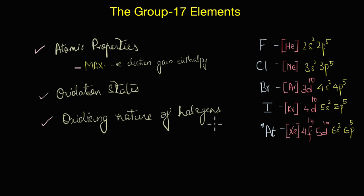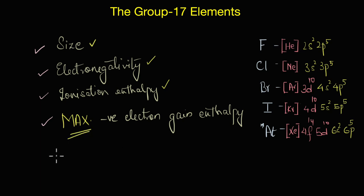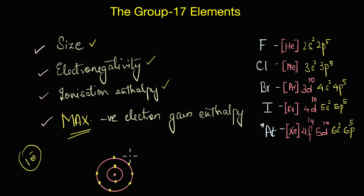If you look at their atomic properties, halogens have the smallest size, highest ionization enthalpy, and highest electronegativity in their respective periods. As they have very little tendency to lose electrons, they also have maximum negative electron gain enthalpy - not surprising at all, because they are just one electron short of the stable octet configuration. Because of the small size and high effective nuclear charge, the incoming electron is actually quite close to the nucleus, which helps stabilize it.